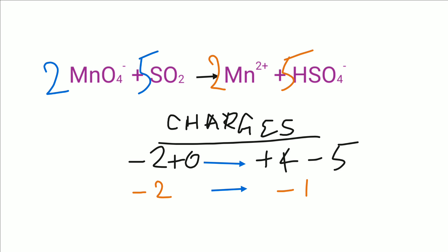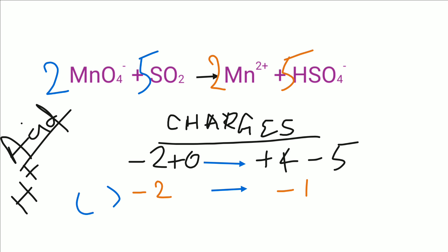The right-hand side charge is minus 1 but the left-hand side charge is minus 2, so the charges are not equal. Since the reaction takes place in acidic medium, we need to add H⁺ ions on the appropriate side to make the charges equal. Adding 1 H⁺ to the left-hand side: minus 2 plus 1 gives minus 1, so both sides will be equal. So 1 H⁺ ion is added to the left-hand side.